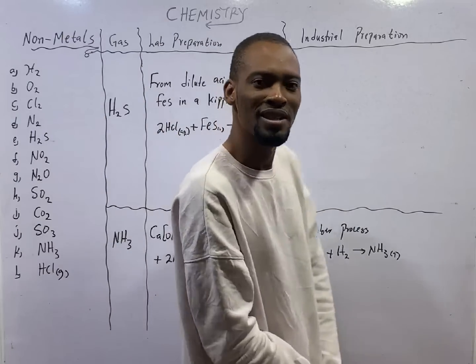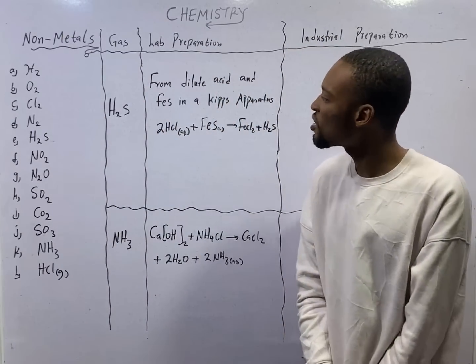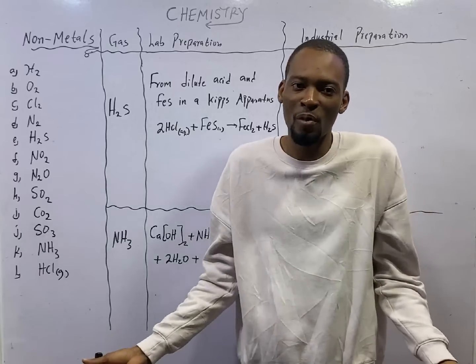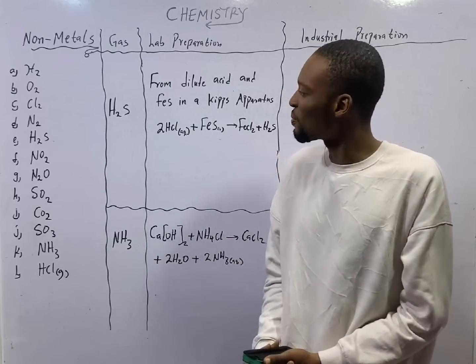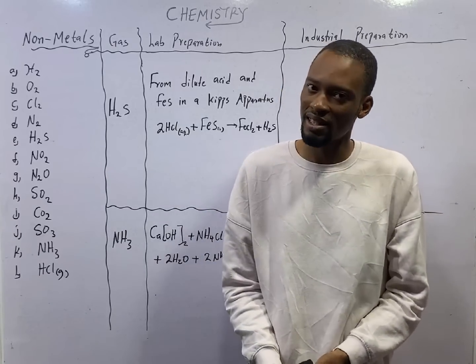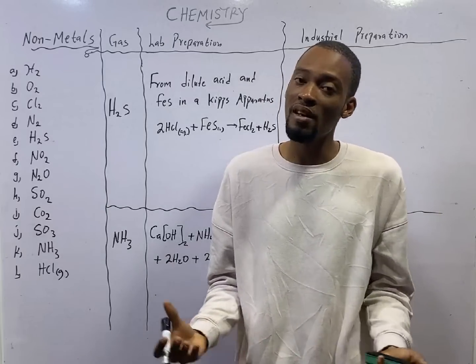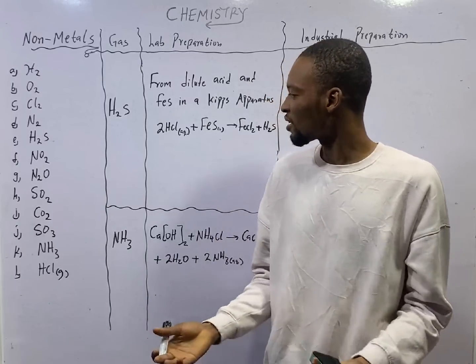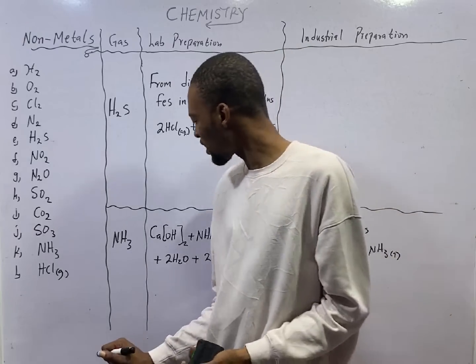Kipp's apparatus is used to prepare which of the following? That is the JAMB question. It is used to prepare hydrogen sulfide gas. Kipp's apparatus is used to prepare that hydrogen gas. How about ammonia gas?